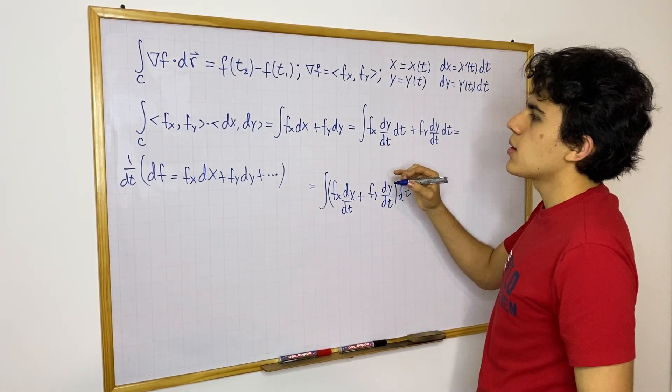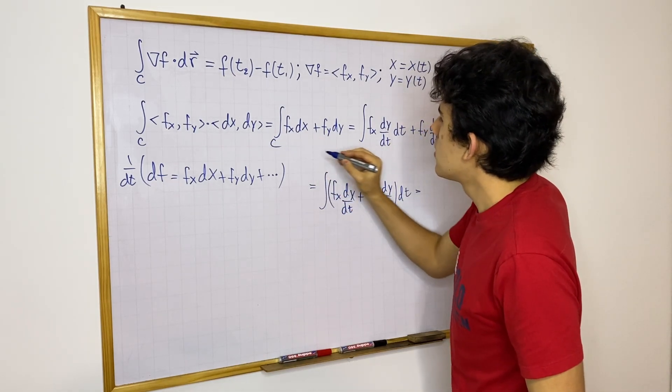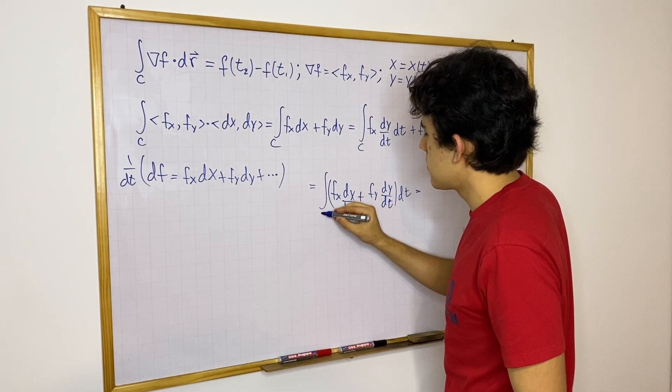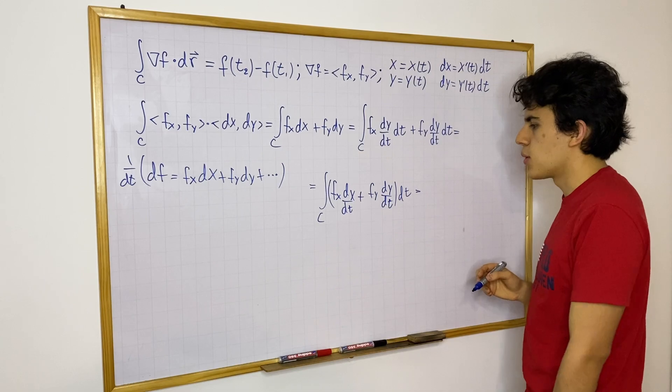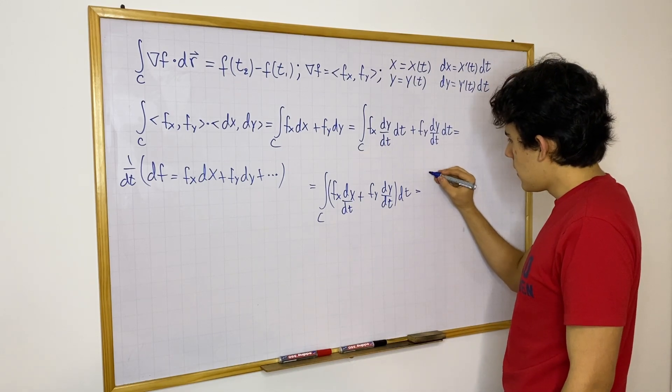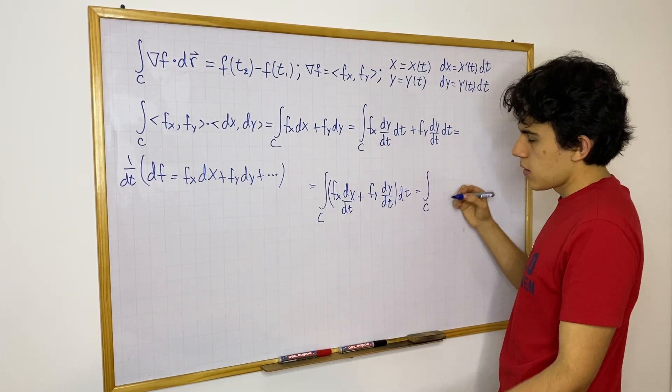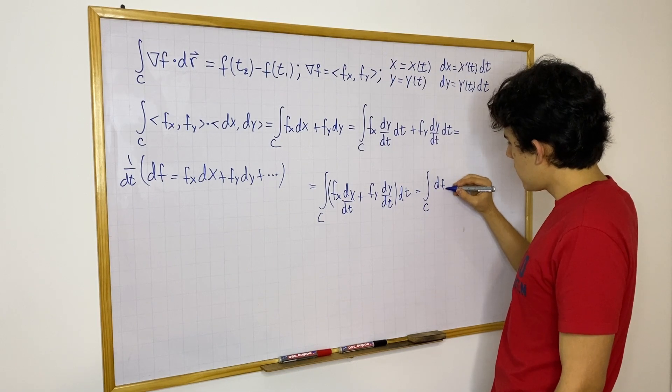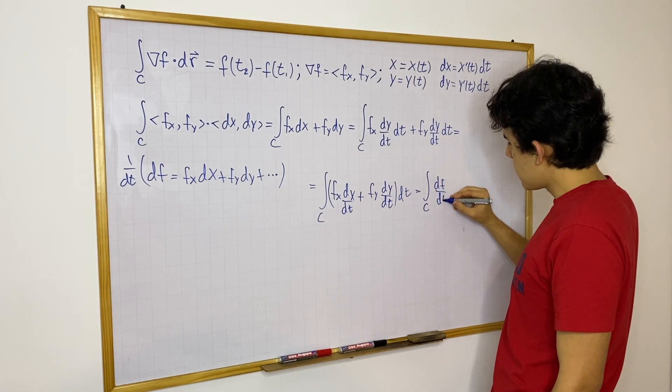So then this becomes an, I totally forgot the C here, that's just good notation, don't forget about it. We have now along the curve C, and now we have df/dt.